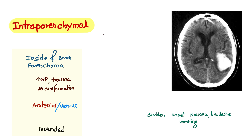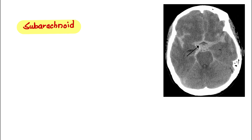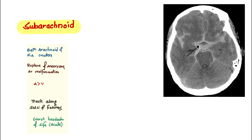Now let's talk about subarachnoid and subdural hemorrhage. Subarachnoid hemorrhage occurs between the arachnoid and the pia mater. Its shape tracks along the sulci and the fissures. If Sara presents with subarachnoid hemorrhage, she might tell you she is having the worst headache of her life — that is the classic acute presentation. The source of subarachnoid hemorrhage is arterial more than venous.